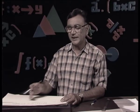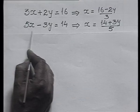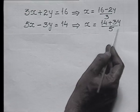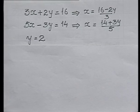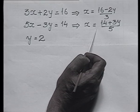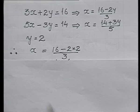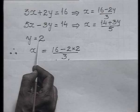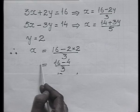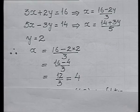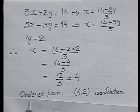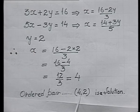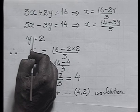We found y equals 2. Substituting this value into the first equation: x equals 16 minus 2 times 2, all divided by 3, which gives x equals 16 minus 4 upon 3, so x equals 4. The ordered pair obtained by the elimination method is (4, 2), and this is a solution of the given system — it satisfies both equations.